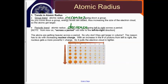Now the atoms are getting heavier across a period, so why don't they get larger in volume? The reason has to do with increasing nuclear charge. As we go across and increase the number of protons from left to right, the nucleus gets a more powerful positive charge, so it can pull the electron cloud in much tighter.